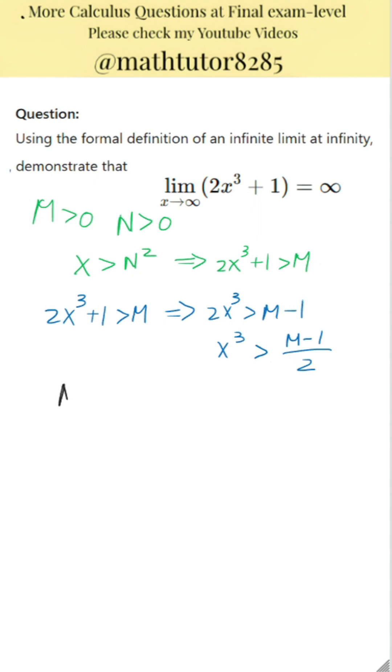Next step, now let N be the cube root of the quantity M minus 1 divided by 2. This ensures that whenever x is greater than N, then x cubed is greater than M minus 1 over 2.